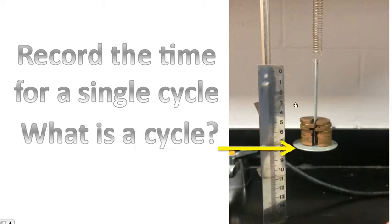A cycle is a repetition in motion. So one cycle would be the movement of these weights from this point all the way up and then back down. That would be one cycle.